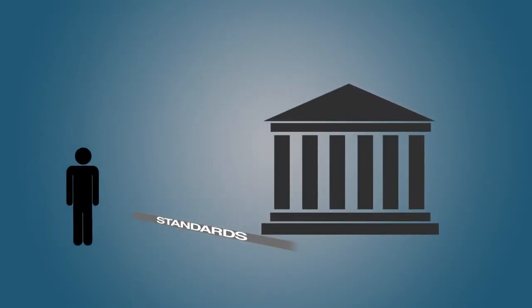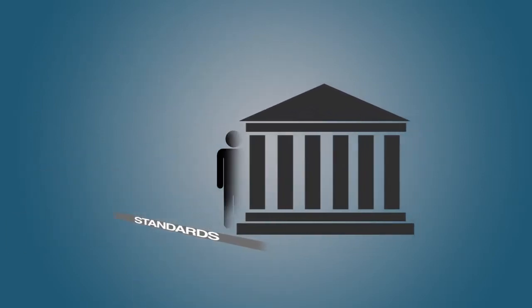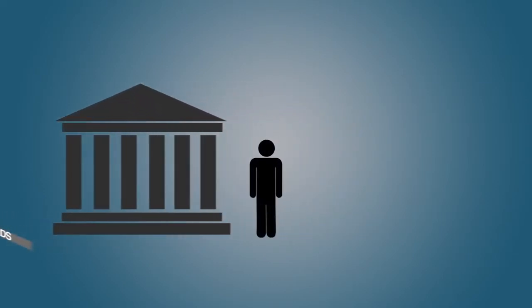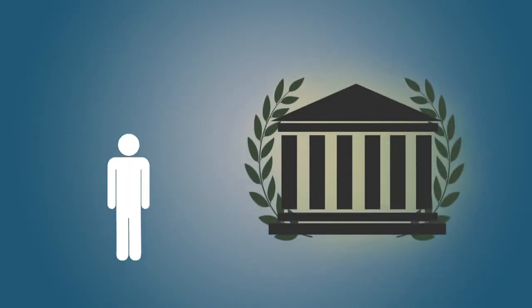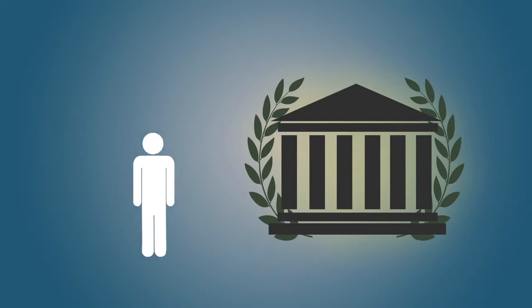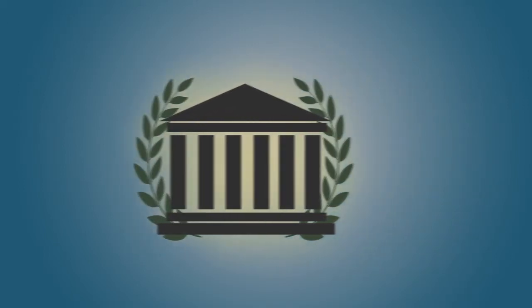By lowering admission standards for blacks and some other minority students, colleges set many of these students up for failure. They get placed in schools for which they're not prepared. And high black dropout rates confirm this view. So does common sense. If white students with mediocre SAT scores were admitted to Ivy League schools, they too would be set up to fail.